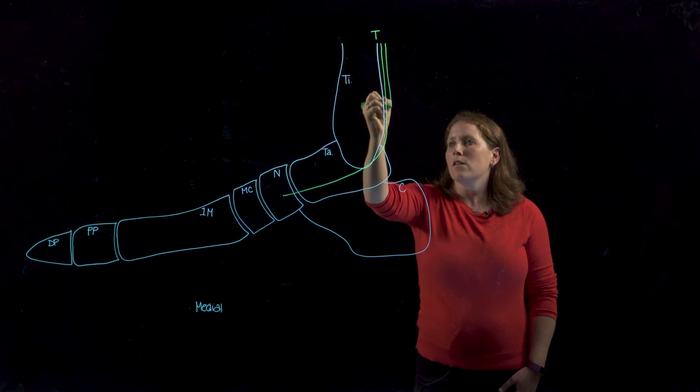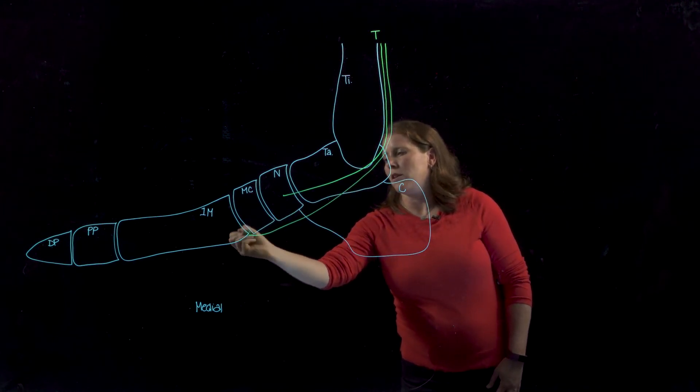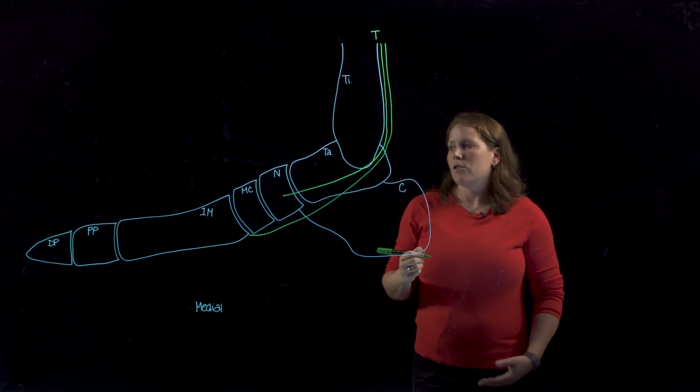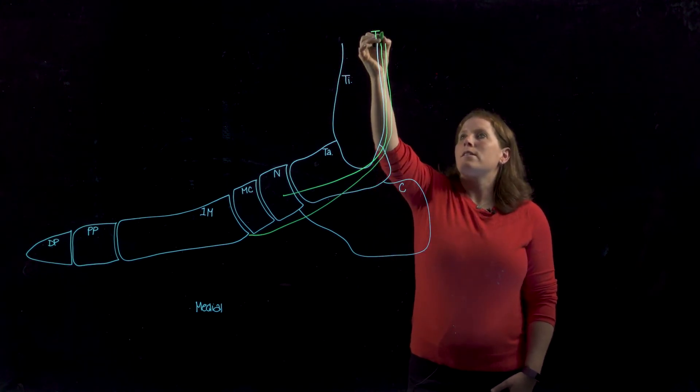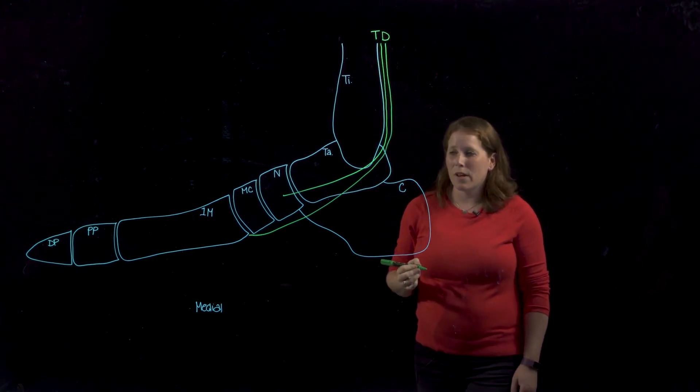Right next to it we have a muscle that will enter into the foot traveling to the other four digits, digits two through five, and this is going to be flexor digitorum longus. We'll identify that as D.